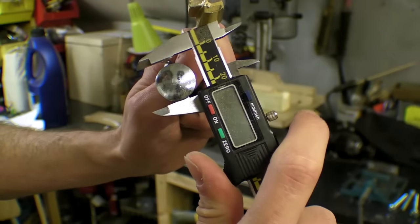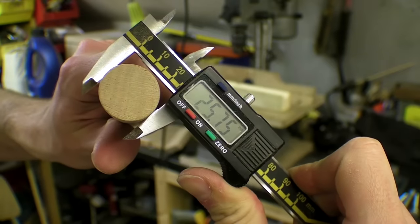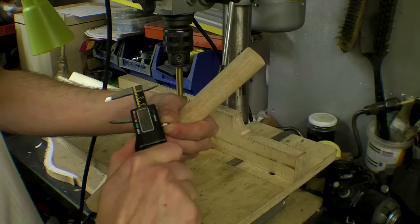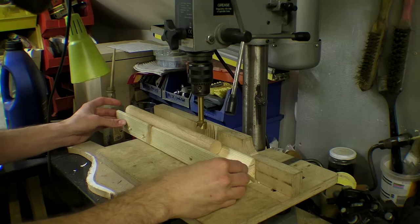I measured the domed head of the coach bolt and made sure I had a forstner bit the same size. I'm going to sink some M8 coach bolts into the broom handles which will allow me to bolt them to the cabinet doors.